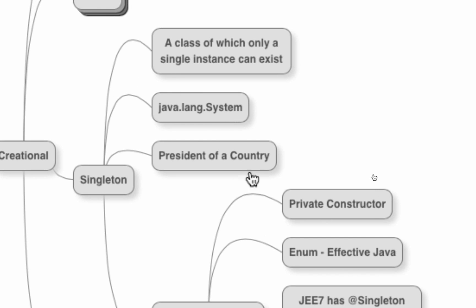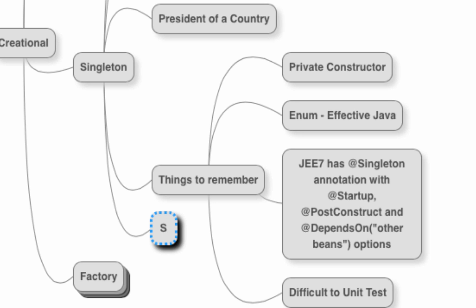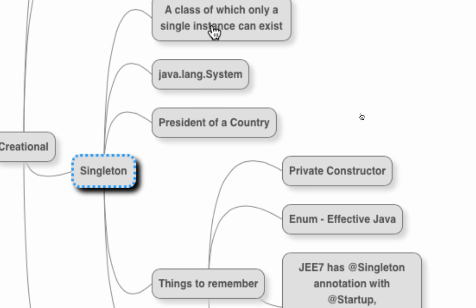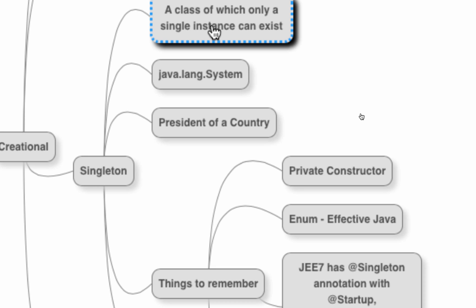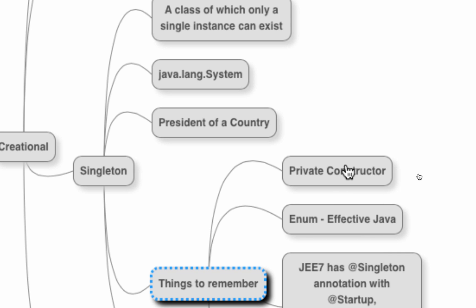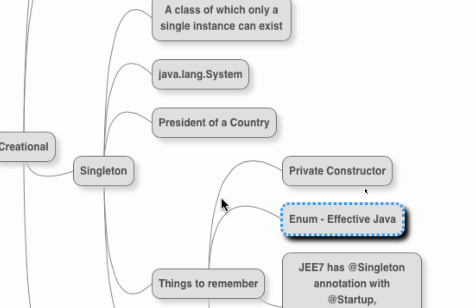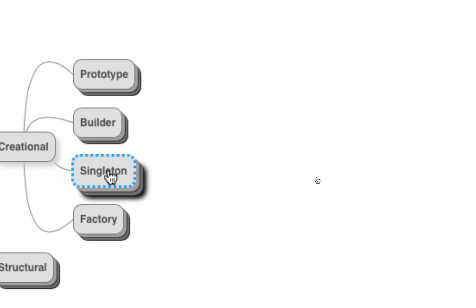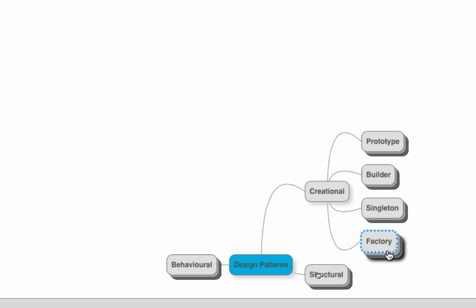One other good place where you have singletons is Spring — in Spring, almost all beans that you create are singleton by default. So, in the singleton pattern you have just one instance of a class per JVM. A good example is java.lang.System, or all the beans when initializing them using Spring. Remember to use a private constructor, and look up Effective Java for how to create a singleton using an enum. Now let's move on to the factory pattern, specifically the factory method.